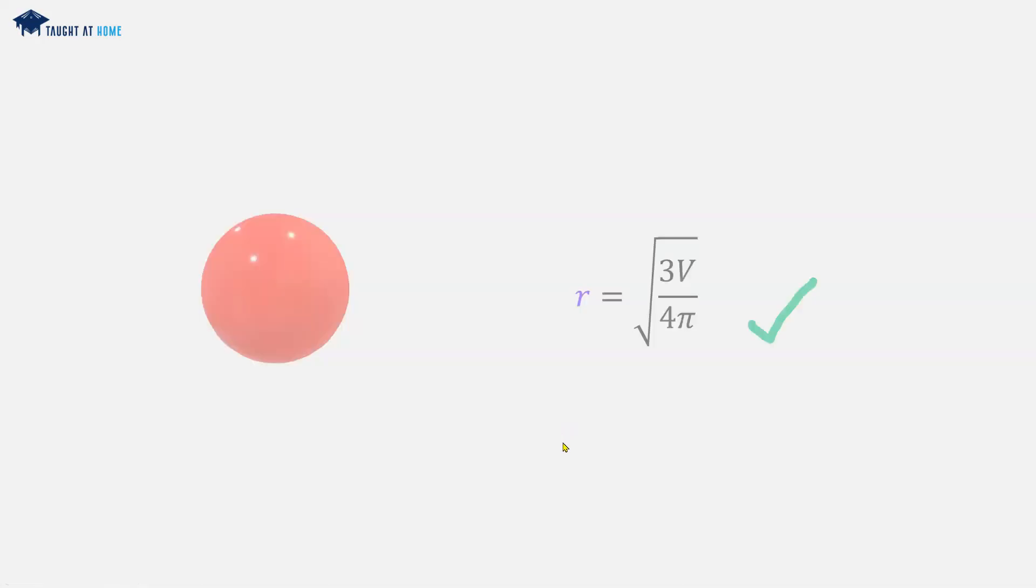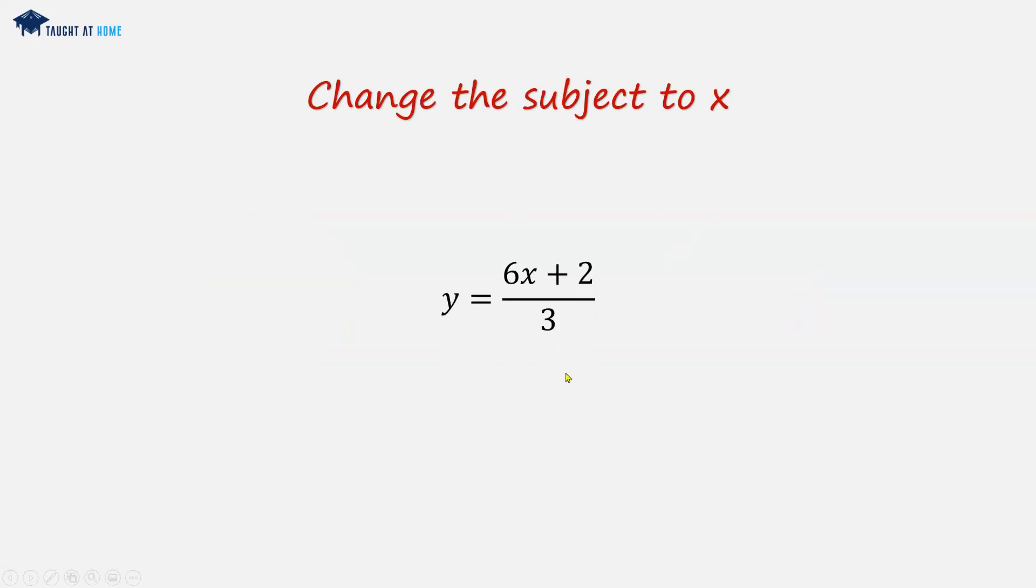Let's have another example. We're asked to change the subject of the formula to x for y is equal to 6x plus 2 all over 3. Because we want x, we can move the right hand side over to the left hand side. So we're flipping it about the equal sign. And now we can see that we've got 6x plus 2 all over 3.